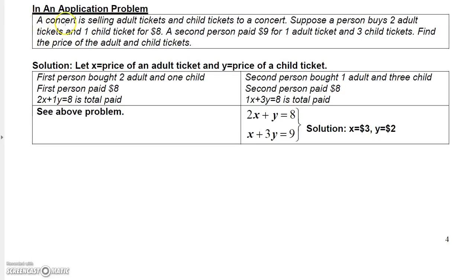This is an application problem, so just to give you an idea. It's concert selling adult and child tickets. Suppose a person buys two adult tickets and one child tickets for $8, and a second person paid $9 for one adult and three child tickets. Find the price of the adult and child tickets. Well, the question here tells me what the variables represent. So I'm going to let x be the price of an adult ticket, and y the price of a child ticket. Now, I have two conditions. I know the first purchase was two adult tickets and one child ticket, and it totaled $8. The second purchase was one adult ticket and three child tickets, and that totaled $9.